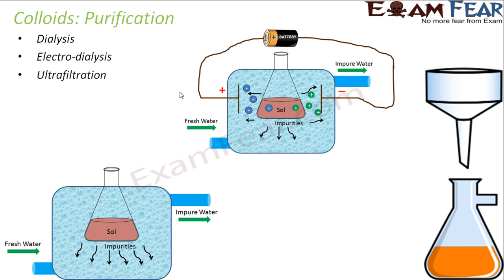The colloids obtained after preparation contain excessive amounts of electrolytes and some impurities. To preserve colloids we need some electrolytes, but excessive electrolytes lead to coagulation — the colloid becomes unstable. As shown with lyophobic colloids, adding electrolytes causes coagulation. Some electrolytes are needed for stability, but excessive amounts are harmful.